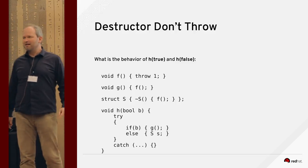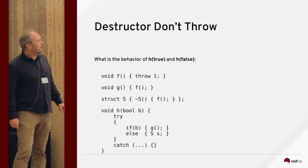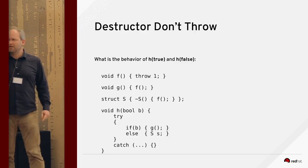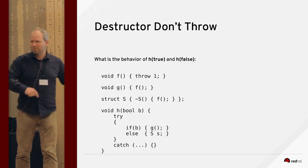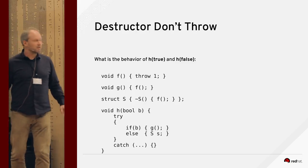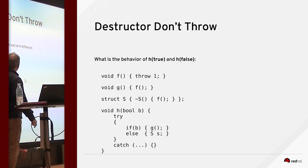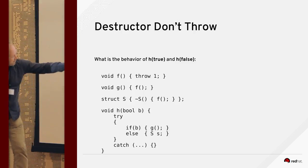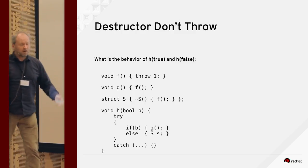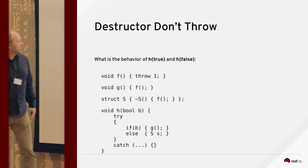Now for the scarier parts — this is a sequel to this morning's talk about a destructor that unexpectedly threw something. Here's another example of a destructor that, in C++11, does not do what you'd expect. We have a function that throws, another function that calls it (so it also throws), and a struct S whose destructor calls that throwing function. We also have a function with a try-catch block, so whatever gets thrown will be caught. When we pass true, we call the throwing function, throw, catch — everything's fine.